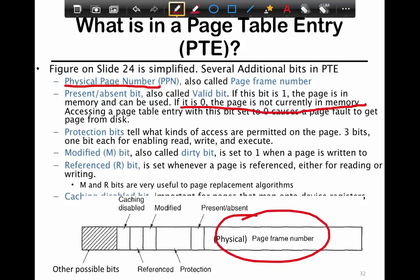Essentially, accessing a page table with bit zero causes a page fault and it needs to be brought in from the disk. So zero means get it from the disk - you got to go get it from there.